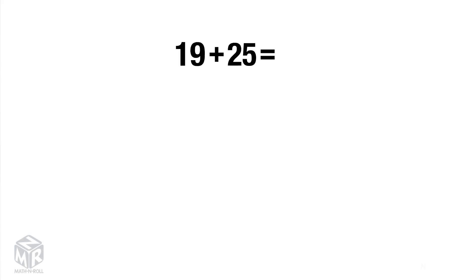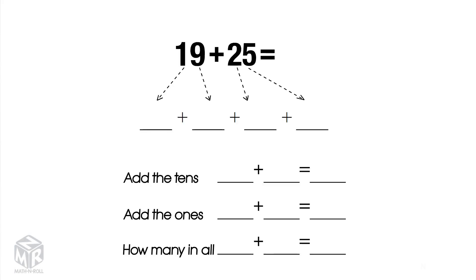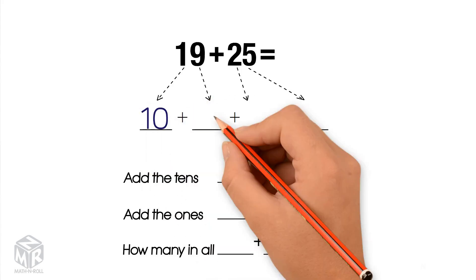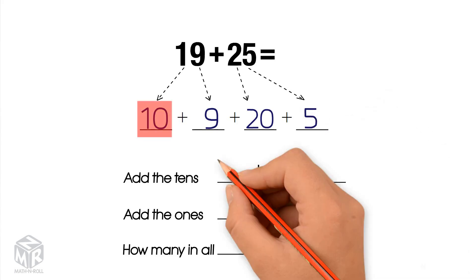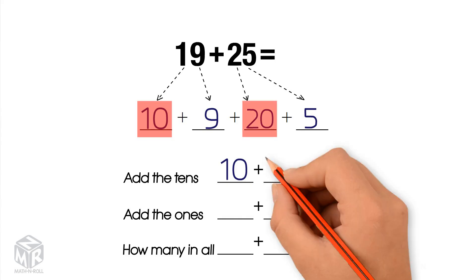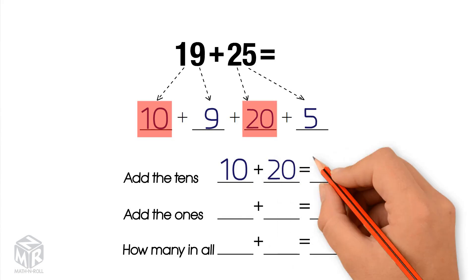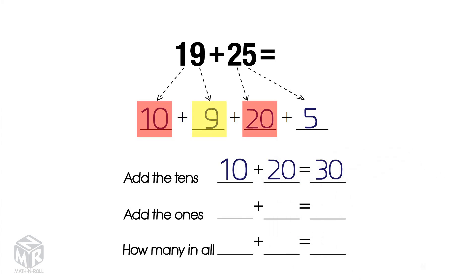Let's try another example: 19 plus 25. 19 breaks apart into 10 and 9. 25 breaks apart into 20 and 5. First, we add the tens: 10 plus 20 equals 30. Next, we add the ones: 9 plus 5 equals 14.